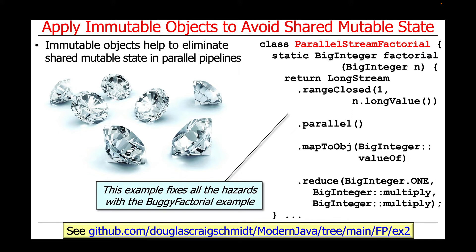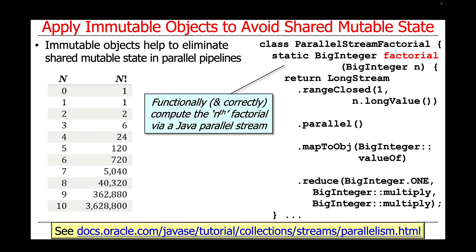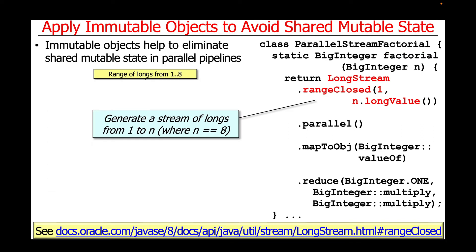For example, the parallel stream factorial class shown here will be used to fix all the hazards with the buggy factorial example we examined in the previous part of this lesson. You can find this code in the EX2 project in the FP folder in my modern Java GitHub repository. The factorial method in the parallel stream factorial class functionally and correctly computes the nth factorial via a Java parallel stream.